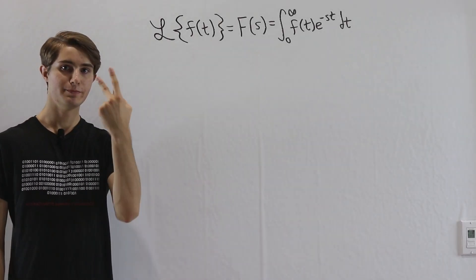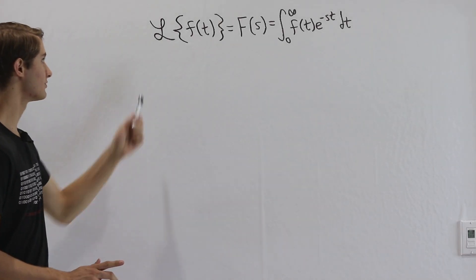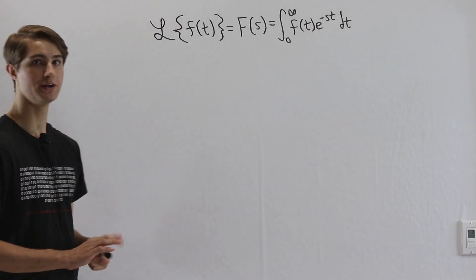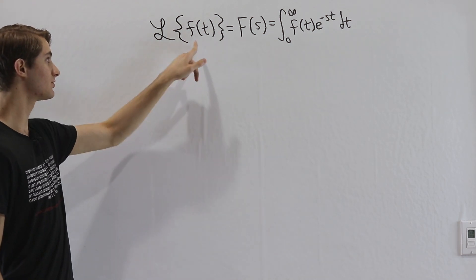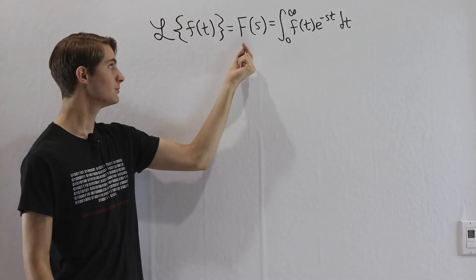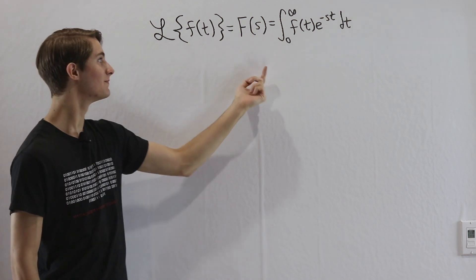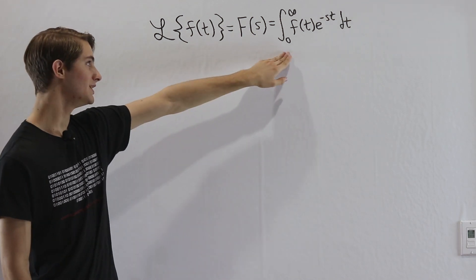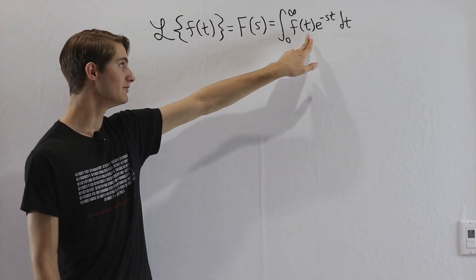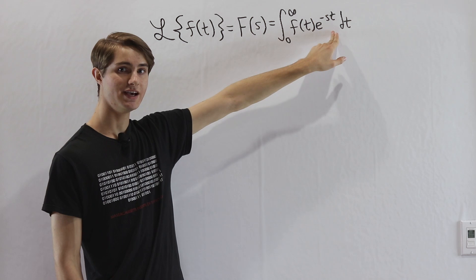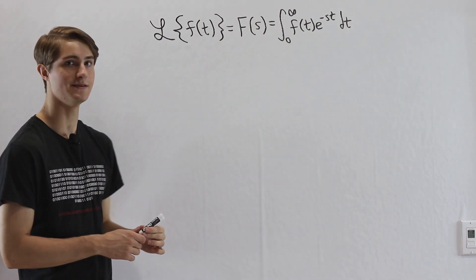We are going to look at two basic properties of the Laplace transform. We denote the Laplace transform of f(t) as big F(s), which equals the integral from 0 to infinity of f(t) times e to the negative st with respect to t.